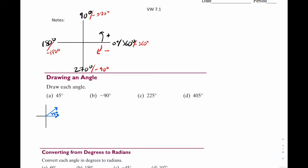A couple of vocab words to add here. This is often referred to as the fixed side — sometimes some books call it the initial side. We like to use the x-axis because it makes everything a lot easier. And then this leg right here is often referred to as the terminal side. Think of it as just a leg that's rotating.